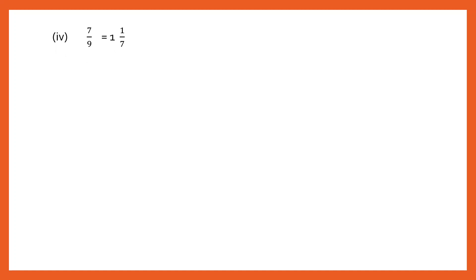Question 4: We have 7 by 9 and on the other side a mixed fraction. Let's convert it to a fraction. 7 ones are 7 plus 1 gives 8 by 7. So the two fractions are 7 by 9 and 8 by 7. The statement says they are equal, which is not true because they are not equal. So this statement is false.